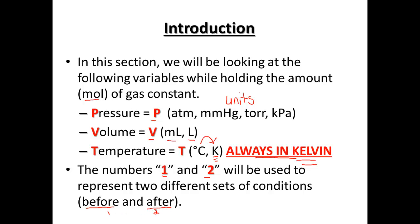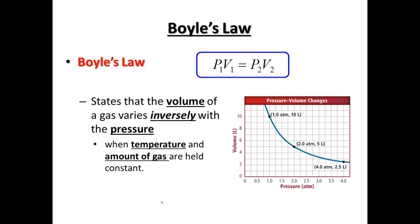So, how do things change from beginning to end? Our first law is Boyle's Law. Boyle's Law states that the volume of a gas varies inversely with pressure. The equation is set up as P1V1 equals P2V2. Inversely means if one goes up, the other must go down to keep everything equal — when temperature and the amount of gas are held constant.